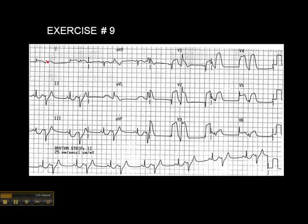If we want to separate the ectopy from the normal beats, we look at leads 1, 2, and 3 — and recall that each of these beats happen simultaneously, so they're coming from the same focus. If we'd just looked at the beat in lead 1, it's virtually indistinguishable from the beat next to it — hard to tell which is normal and which is ectopic. But in another lead, this is clearly a sinus beat and this is clearly a PVC.